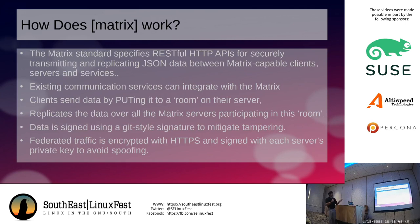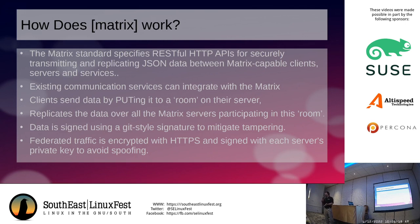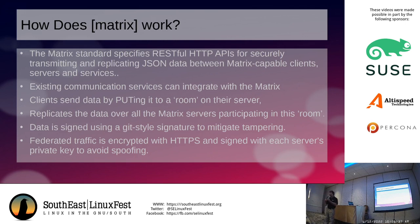How does Matrix work? The Matrix standard is a RESTful HTTP API for securely transmitting and replicating JSON data between Matrix-capable clients. This is not super exciting technology — very basic things we've been using for many years, just used in a different way. It's not terribly complicated to move text, images, or data from one place to another. If we wrap that in a bit of encryption, we get all the things we'd be looking for in a secure, reliable communications platform.